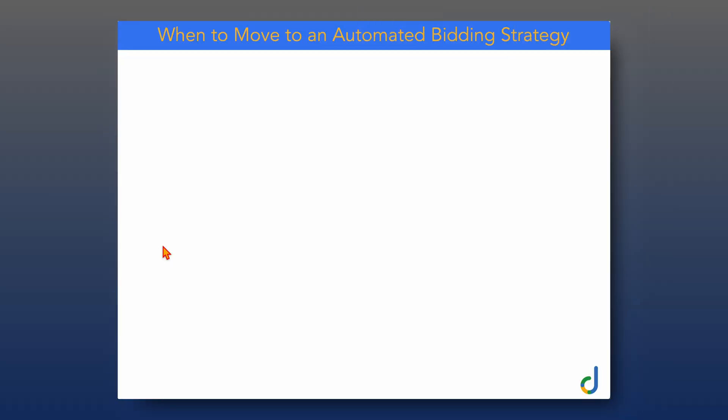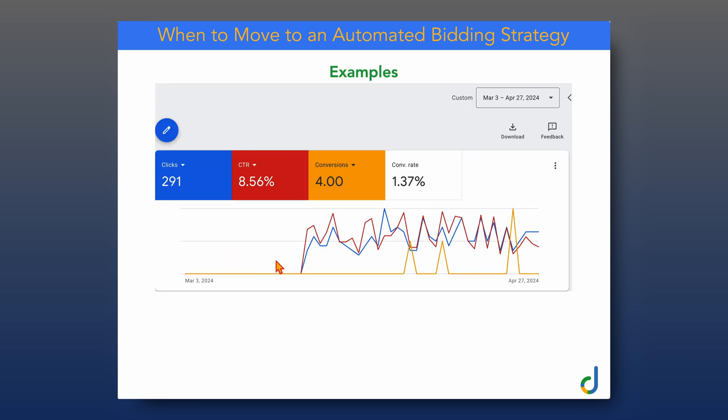Those are five core rules for getting your bidding strategy set right. Now let's jump into some screen shares so I can walk you through this process with practical examples to help you understand these core foundations of getting your bidding strategies right in Google Ads. First, we're going to do some examples in a presentation, and then we're going to move over into some real Google Ads accounts. I want to give you some simple examples of when to move to an automated bidding strategy — going from maximize clicks or max CPC to maximize conversions or maximize conversion value.